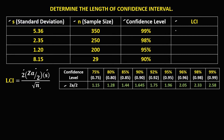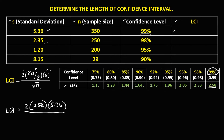To find the length of the confidence interval for this given: LCI equals 2 times the confidence coefficient. Since the confidence level is 99%, the confidence coefficient is 2.58. Times the standard deviation, that's 5.36, all over the square root of the sample size — square root of 350.